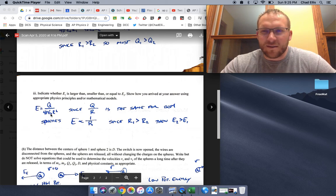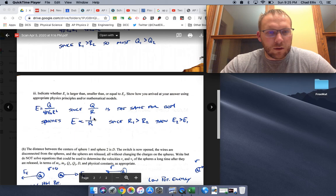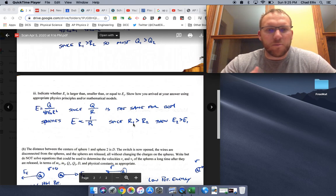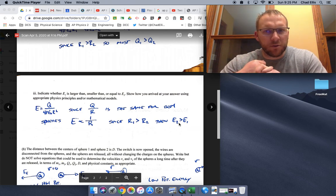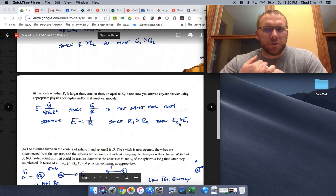So basically, we can simplify this equation. Again, 4 pi epsilon not is the same as well. So this equation simplifies down to the electric field is equivalent to one over R. Since this now is an inverse relationship, since R1 is bigger than R2, now E2 must actually be bigger than E1. So even though their electric potentials are the same, their electric fields are different and the charges on each of them must be different.